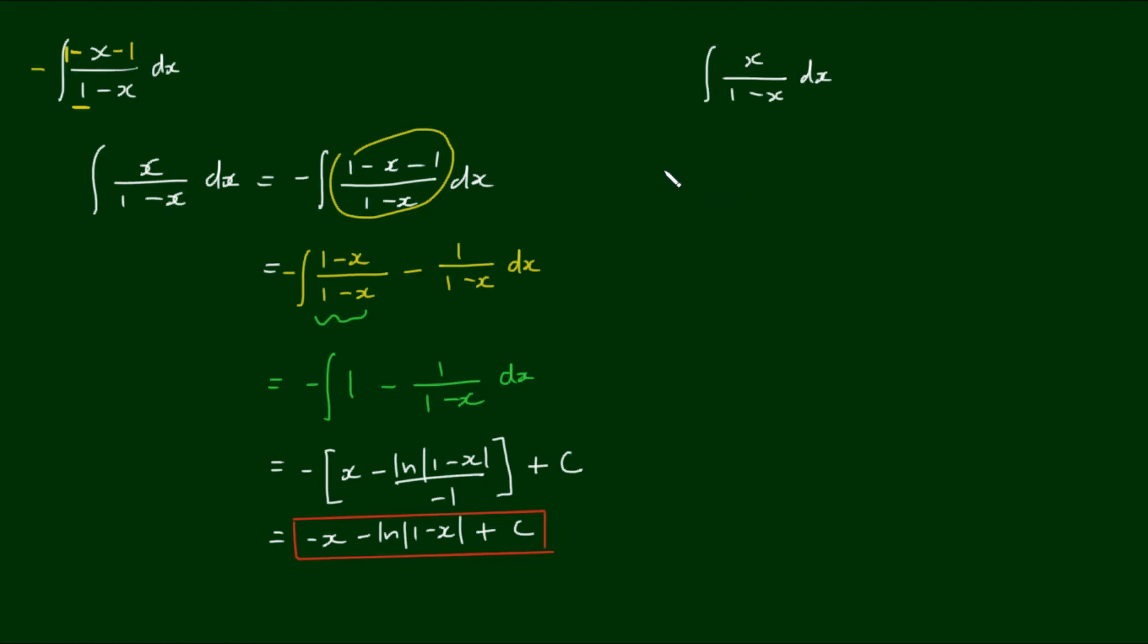Let's substitute the denominator with u equals 1 minus x. And that means if I rearrange, u minus 1 equals negative x. And that means that x equals 1 minus u.